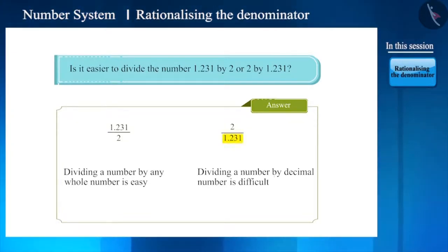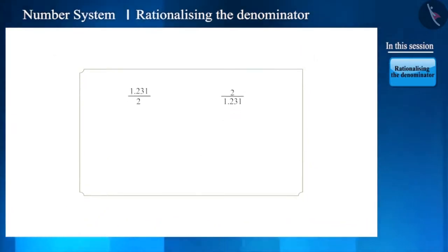Friends, both 1.231 and 2 are rational numbers. Suppose there was an irrational number in place of the denominator. For example, if we had to divide 1 by root 3, then what a difficult task it would be.